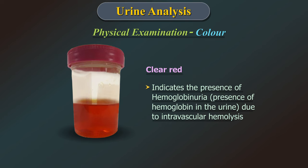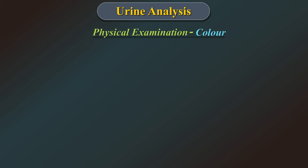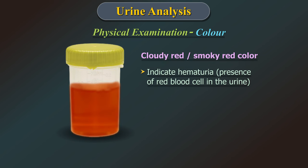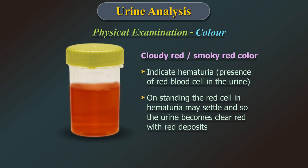Clear red may indicate presence of hemoglobinuria, that is presence of hemoglobin in the urine due to intravascular hemolysis. Cloudy red or smoky red colour may indicate hematuria, that is presence of red blood cells in the urine. On standing, the red cells in hematuria may settle down and the urine becomes clear with a red deposit.